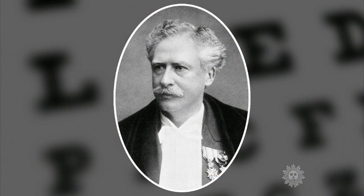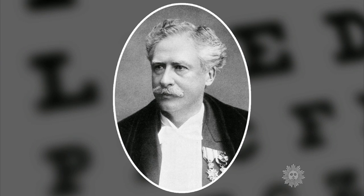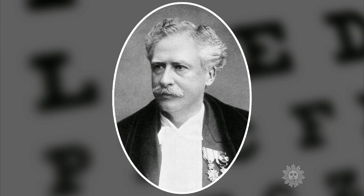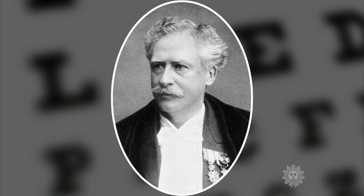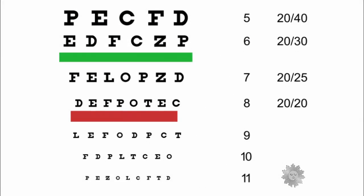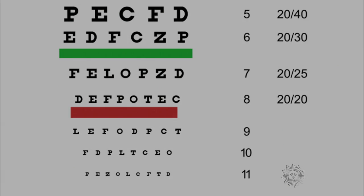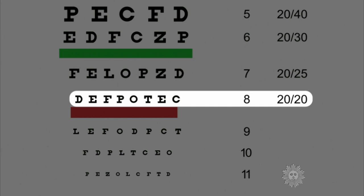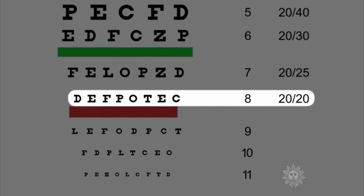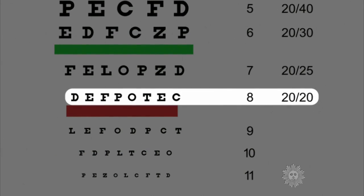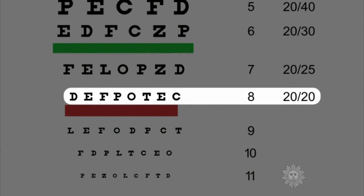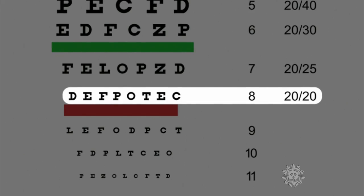And it's Snellen who devised the system of rating one's vision as a ratio. If a patient could read a line of type 20 feet away with what Snellen judged to be normal acuity, he proclaimed them to have 20-20 vision.